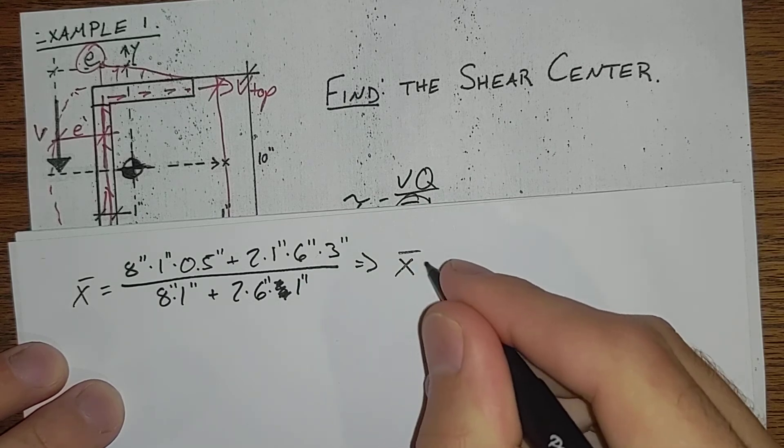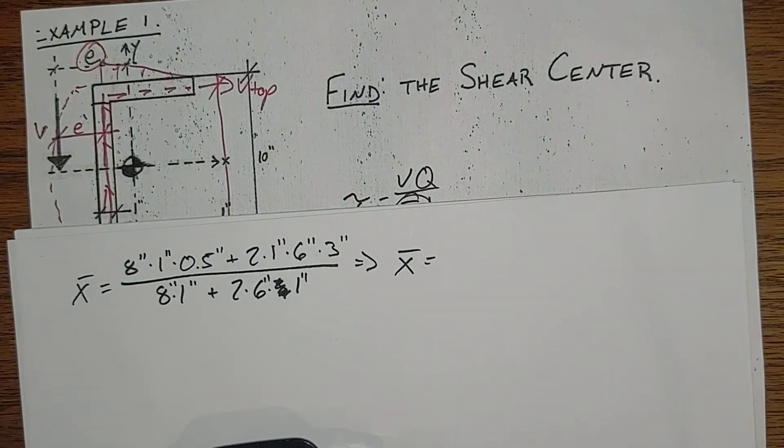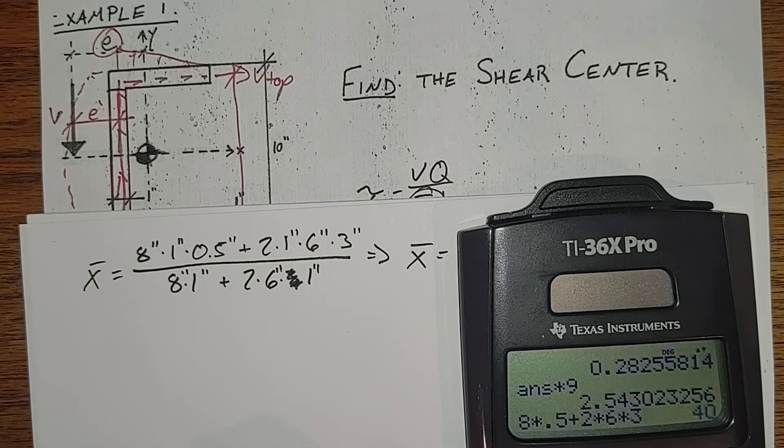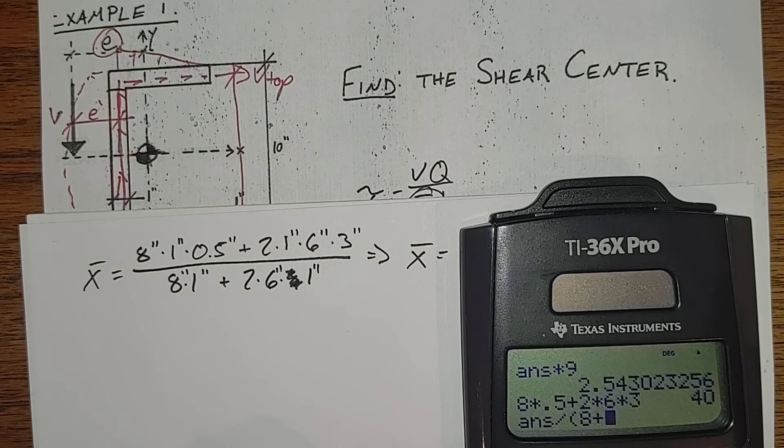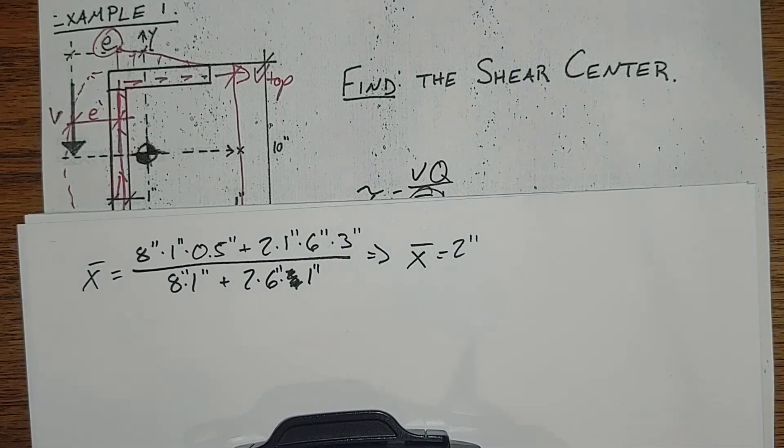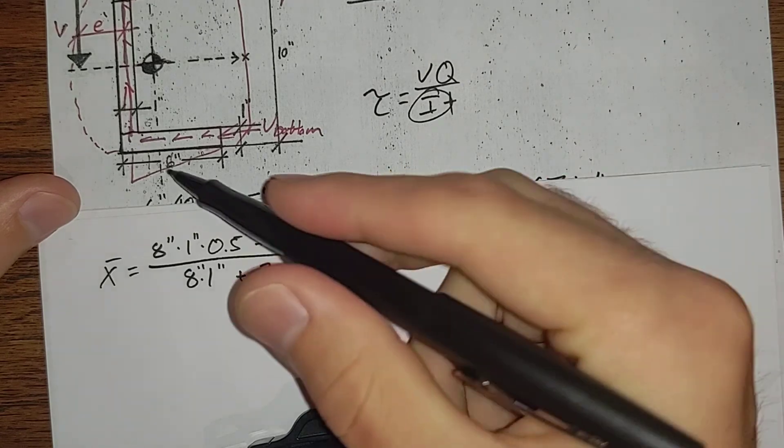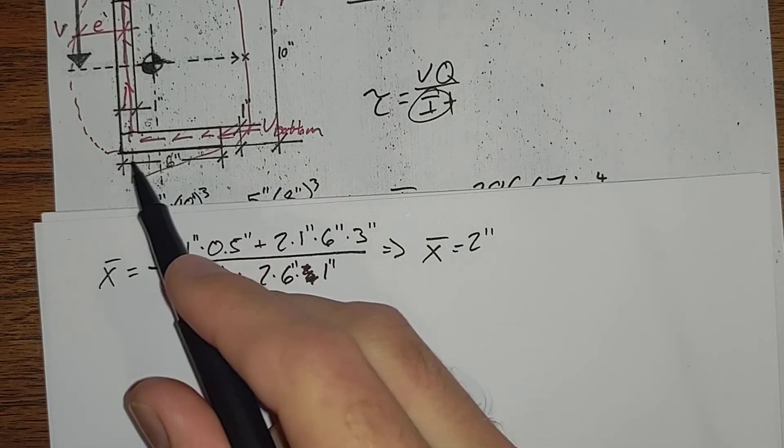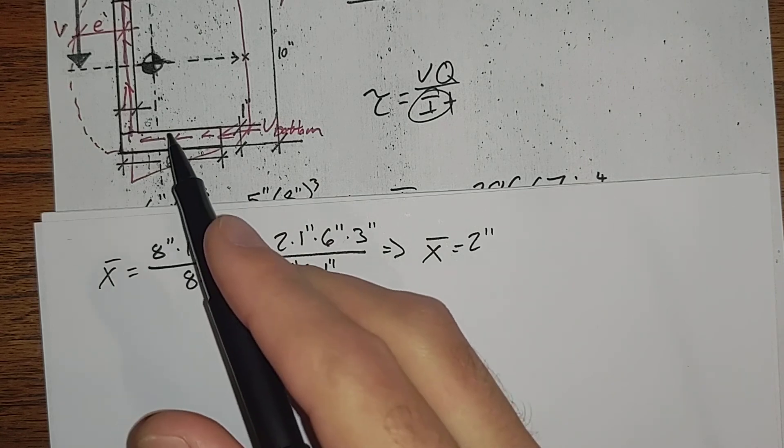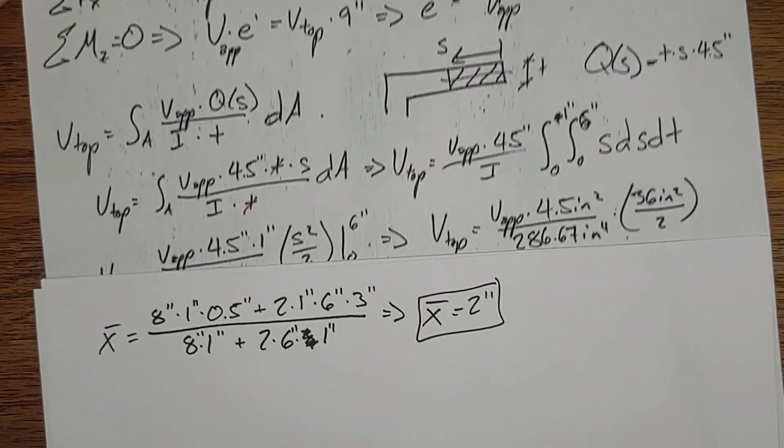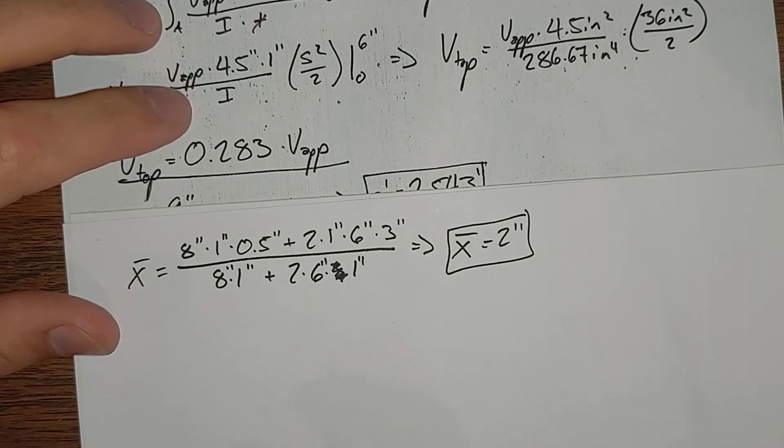Giving us X bar is equal to 8 times 0.5 plus 2 times 6 times 3 divided by 8 plus 12. X bar occurs at 2 inches. Does that make sense? That's X bar at 2 inches there. Suppose it does. 6 by 1, 8 by 1 by 1 half, 2 times 1 plus 6 plus 3, 1 times 6 times 3. Yeah, 2 inches for X bar. So our X coordinate of our shear center here.